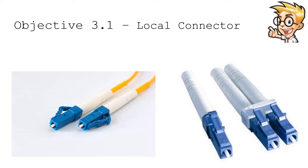One of the challenges with any type of network connection is that there is only so much real estate on a switch. So if you have a smaller connector, you can fit more interfaces on the same amount of real estate. One of these smaller types of fiber connections is an LC connector, or local connector. An LC connector is a single interface that has inside of it two separate fiber connections — usually one for transmit and the other for receive. These can also be used as separate strands on connections, depending on the type of connection you're using and how many interfaces might be available on that switch.